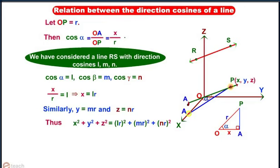Now, x² + y² + z² equals to R² into (L² + M² + N²). But we know that x² + y² + z² equals to R². Hence, we can say that L² + M² + N² equals to 1.